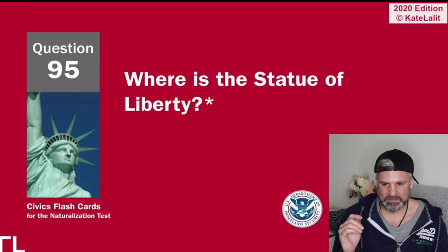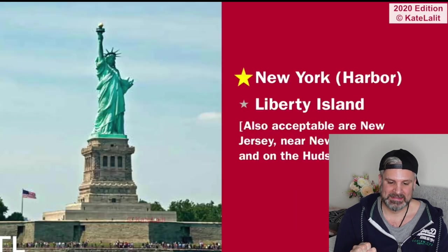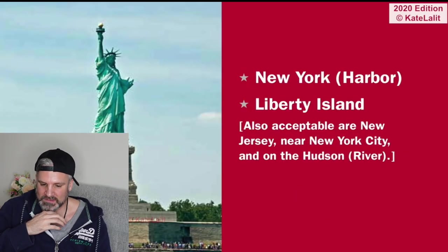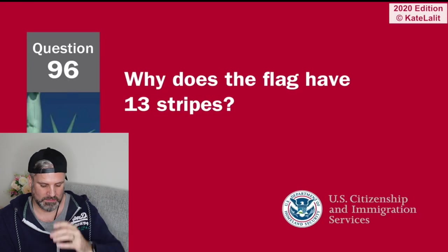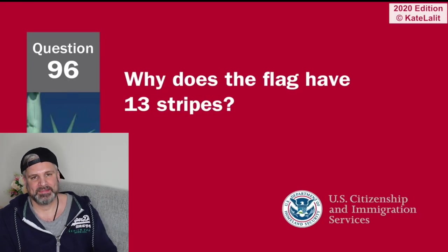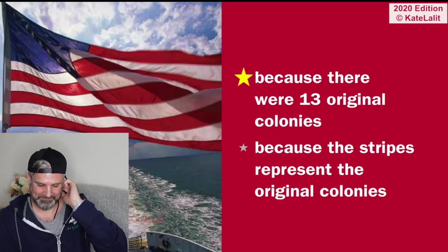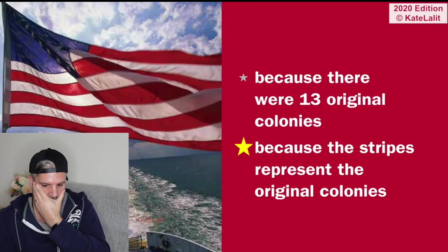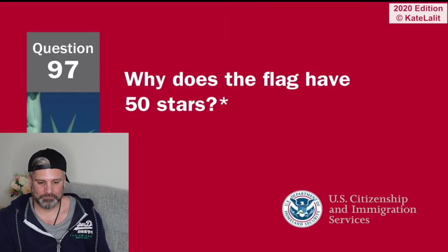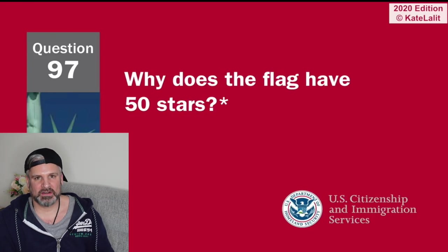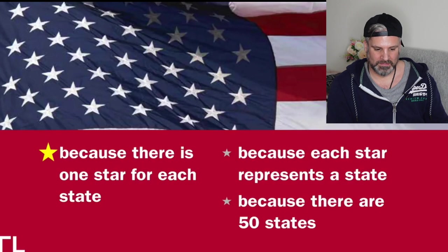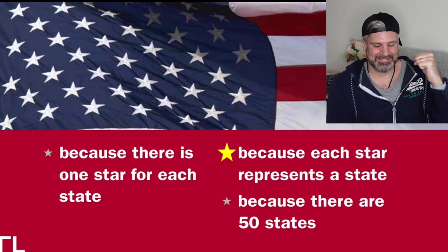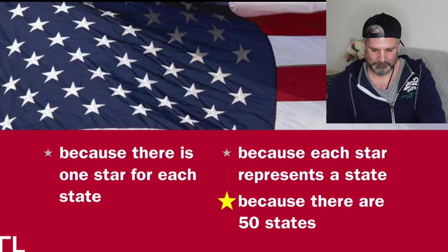What is the capital of the United States? Washington DC. Where is the Statue of Liberty? It's on Liberty Island near New York City — New York Harbor. Also acceptable: New Jersey, near New York City, and on the Hudson River. Why does the flag have 13 stripes? Because there were 13 original colonies. Why does the flag have 50 stars? Because there is one star for each state — there are 50 states.